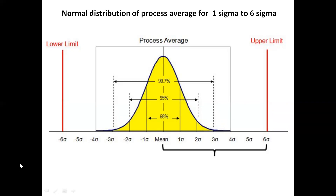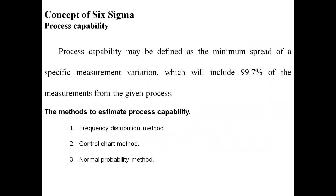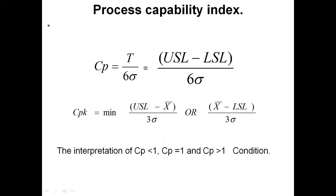The concept of Six Sigma brings process capability into play. Process capability is the ability of a process to produce components within specification. There may be a rejection rate measurement — the goal is 99.7% acceptance from the given process with minimum spread. This leads to the process capability measurement methods.